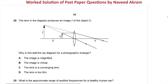The lens in the diagram produces a virtual image I of object O. Why is this not the ray diagram for a photographic enlarger? Option A says the image is magnified — that is not the reason. Option B says the image is virtual — yes, for a photographic enlarger the image must be real, but here the image is virtual, so option B is the right answer. Option C says the lens is a converging lens — not the right reason. Option D says the lens is too thin — that has nothing to do with it.